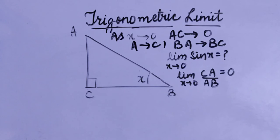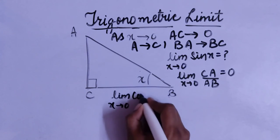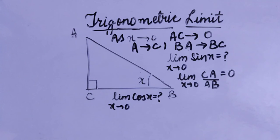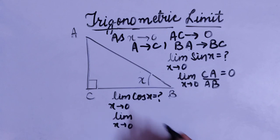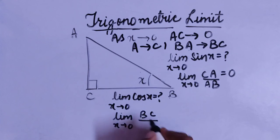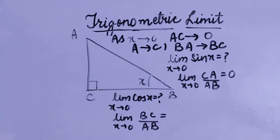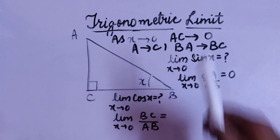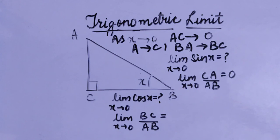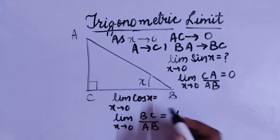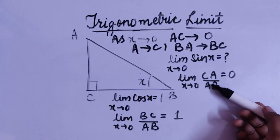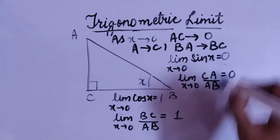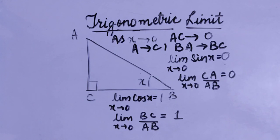Now similarly, if we are talking about the limit as x tends to 0 of cos x, then what will be our value? Cos x is base upon hypotenuse, which is BC upon AB. As we know, BA was approaching towards BC, so BC upon AB will be equal to 1. Therefore, limit x tends to 0 of cos x will be equal to 1. So these two results — limit x→0 of sin x equals 0, and limit x→0 of cos x equals 1 — should now be clear to all of you.